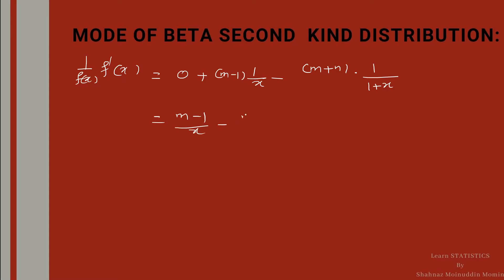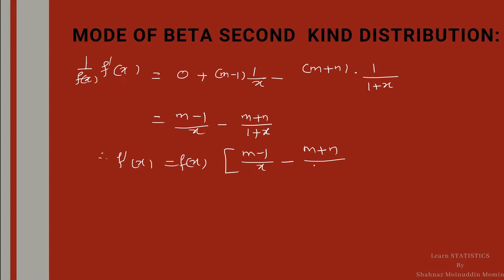Therefore, f'(x) = f(x) * [(m-1)/x - (m+n)/(1+x)].